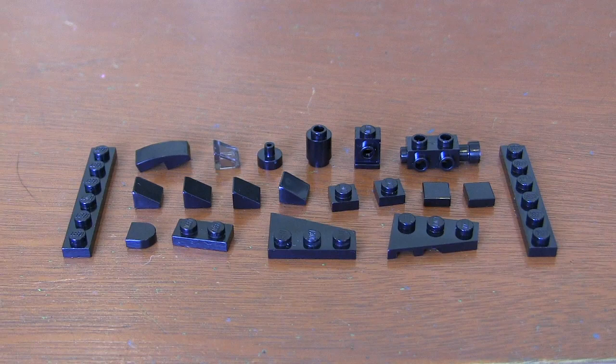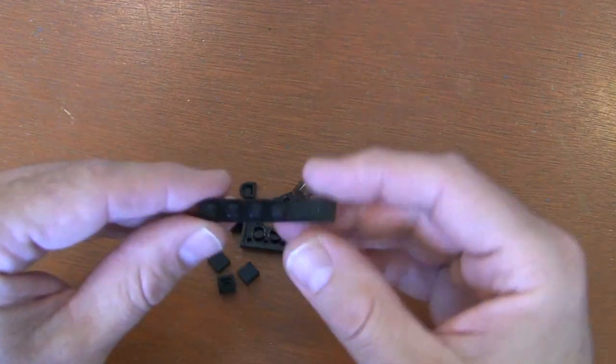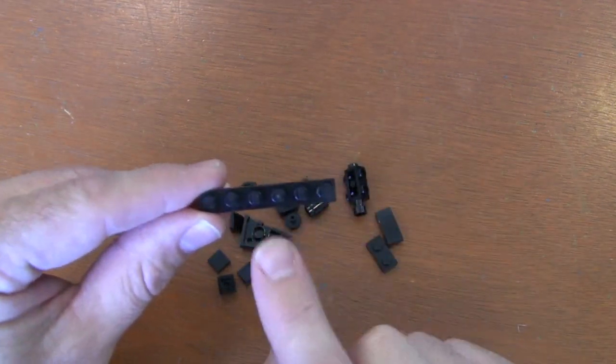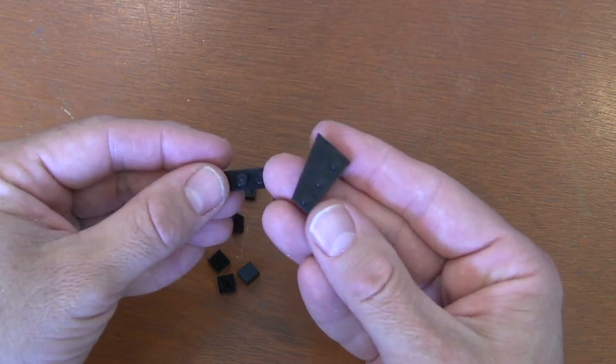In the description of this video, I've left the piece names, count, and design IDs. We're going to start with this 1x6 plate piece. On the back three studs, I'm going to grab a 2x3 wedge plate.